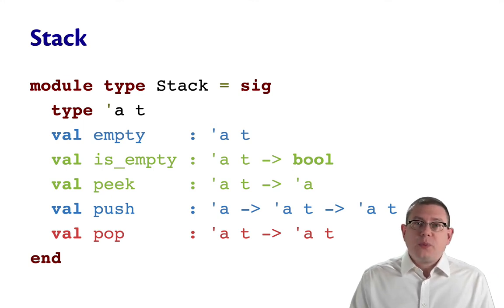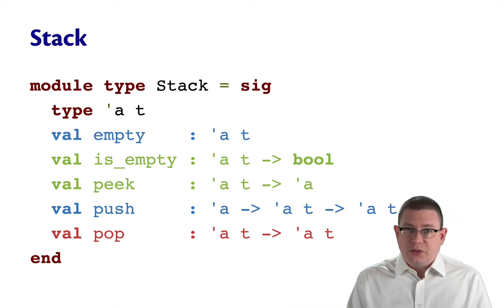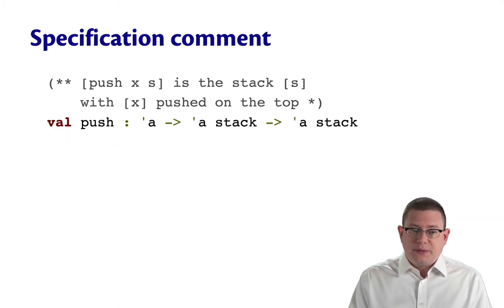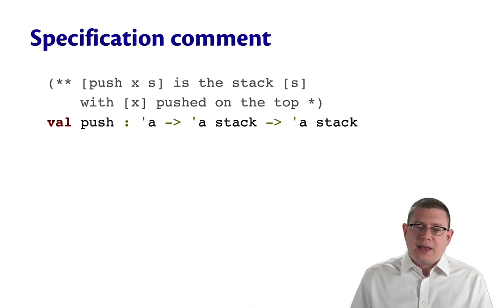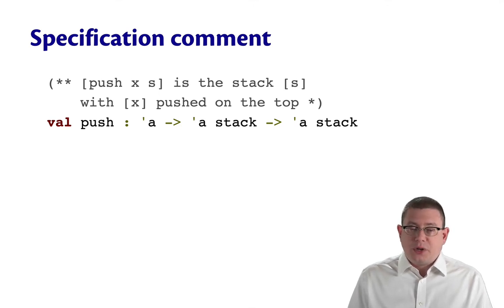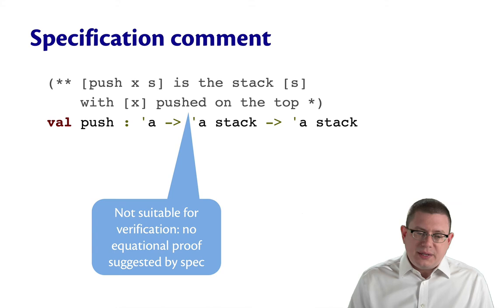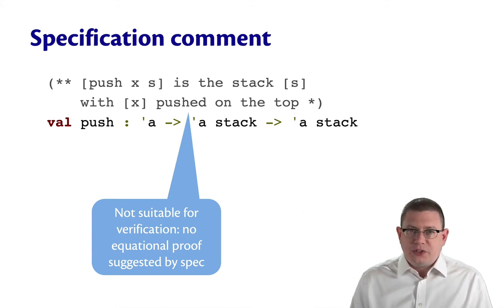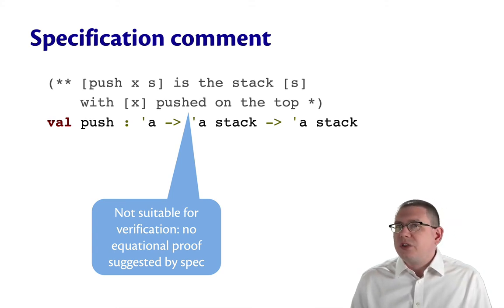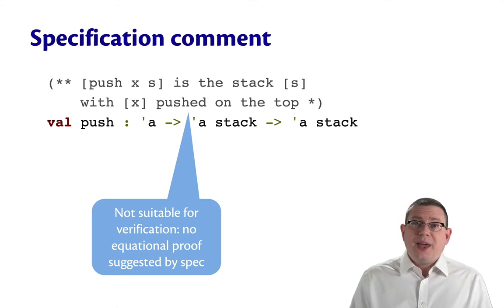Now we could try to write the standard kind of specifications for this stack that we always write. For example, for push we might say that push x s is the stack s with x pushed on the top. This is not a kind of specification that's really suited for the verification that we are doing right now. That's okay.